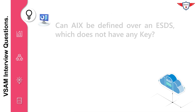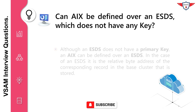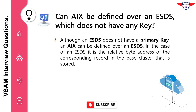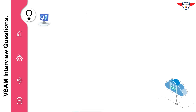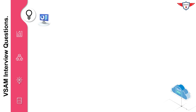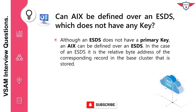Can AIX be defined over an ESDS which does not have any key? Although an ESDS does not have a primary key, an AIX can be defined over an ESDS. In the case of an ESDS, it is the relative byte address of the corresponding record in the base cluster that is stored.